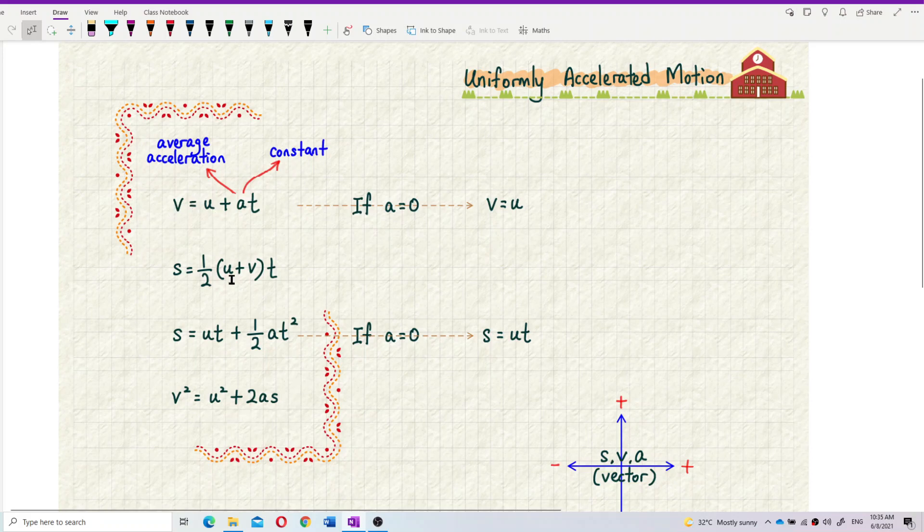So remember the formula correctly. Don't make such a mistake like you memorize the formula wrongly, like you put V square equal to U square plus AS. You forget about the 2 there. So be careful, don't make such a mistake.